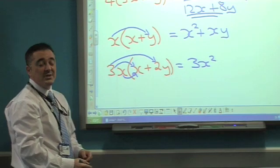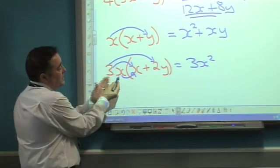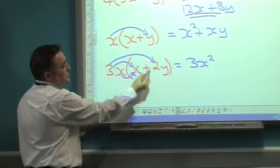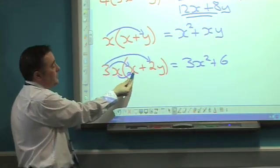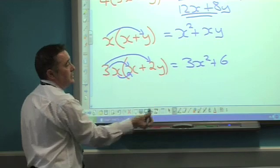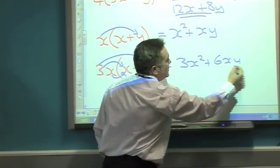Now 3x times positive 2y. There's an x involved. 3 times 2 gives me 6. It's a positive 6 because there's a positive there. Then x times y gives xy.